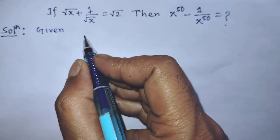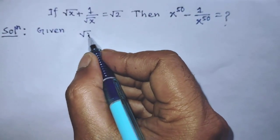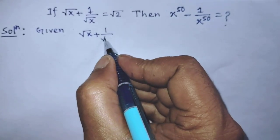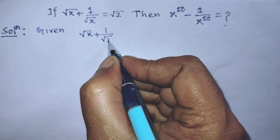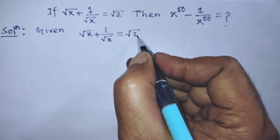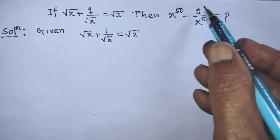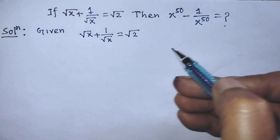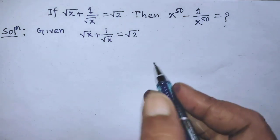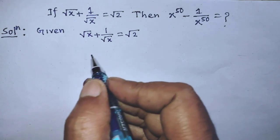Our given equation is square root of x plus 1 over square root of x is equal to square root of 2. To find the value of this algebraic expression from this equation, first of all we have to take square on both sides of this equation.